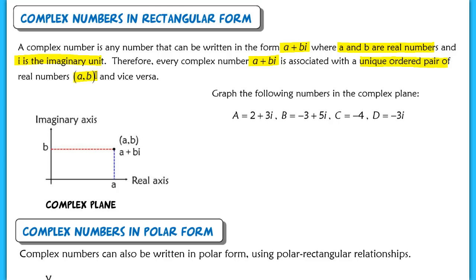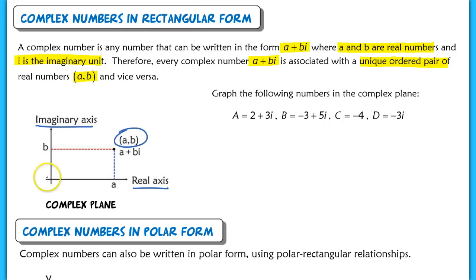Here I've got a complex plane. Notice it looks very similar to the rectangular plane. The only difference is that we denote the x-axis as the real axis and the y-axis as the imaginary axis. So for this particular complex number written in the form A plus Bi — which is in rectangular form — this is represented in the complex plane as the coordinate A, B. Let's graph some complex numbers in the complex plane.